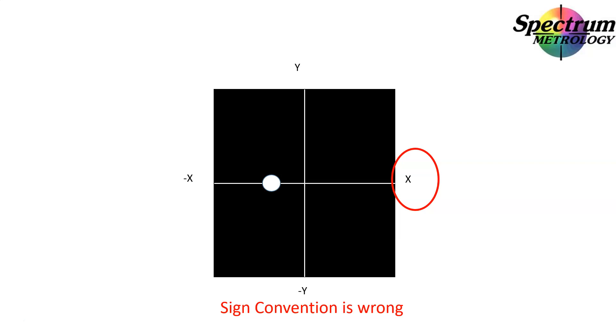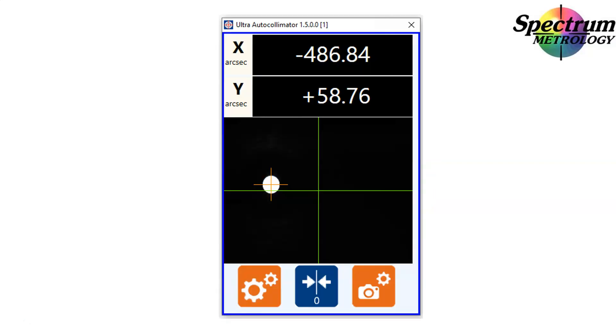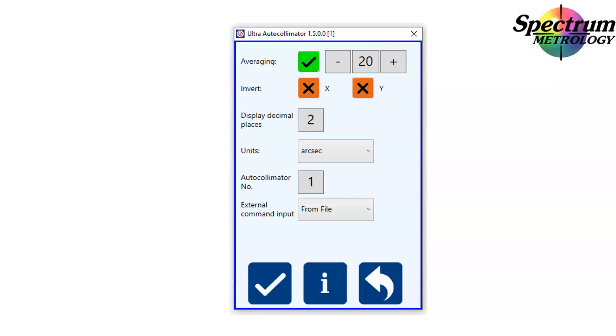To change this, we go into the Ultra autocollimator mini display on the top right-hand side. We go into settings, and in here we can see there is an invert X or Y option.